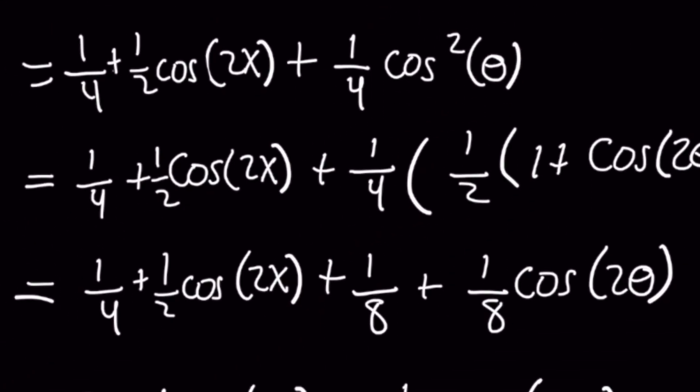Now when you expand everything through, you're going to then get one-fourth plus one-half cosine of 2x plus one-eighth plus one-eighth cosine of two theta.